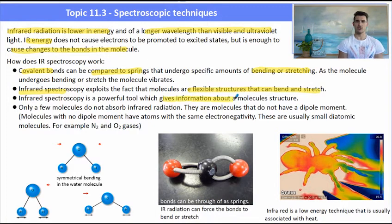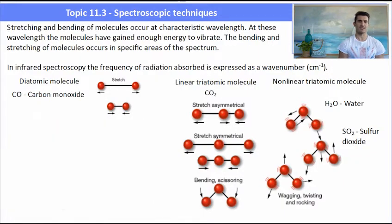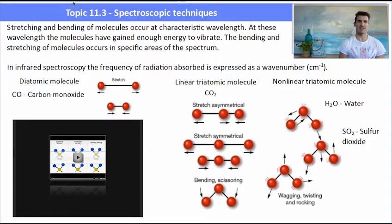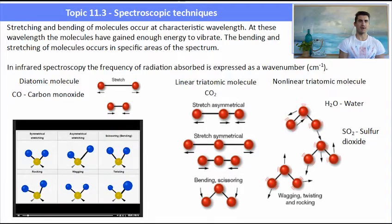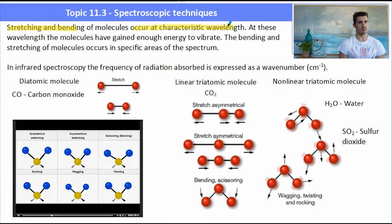IR is a powerful tool to determine what functional groups are present in a molecule, and there's very few molecules that don't absorb infrared radiation. Infrared is usually associated with heat, so we've got our IR camera on the right-hand side there. So the stretching and bending of molecules occurs at characteristic wavelengths. At these wavelengths, the molecules, the bonds, have gained enough energy to start to vibrate.